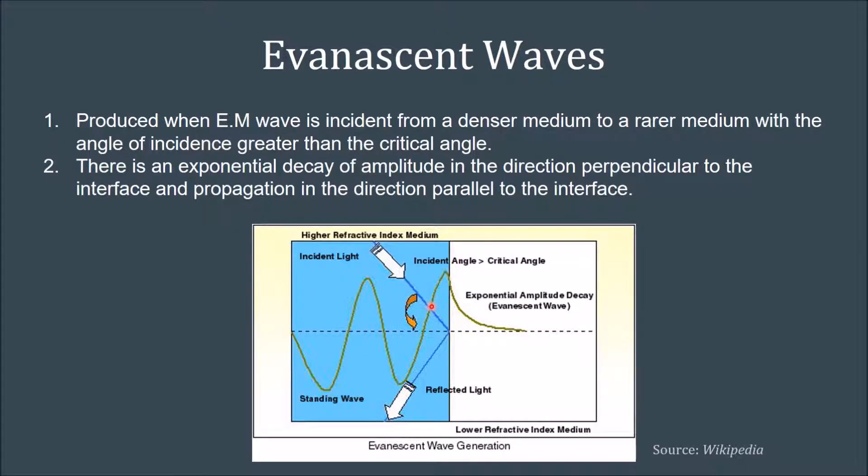Now let's come to evanescent waves. It is produced when the light wave traveling from a denser medium to a lighter medium has its angle of incidence greater than the critical angle. We see an exponential decay of amplitude in the direction perpendicular to the interface and propagation in the direction parallel to the interface. It is also to be noted that in evanescent waves the energy is not lost, only that the amplitude decays.